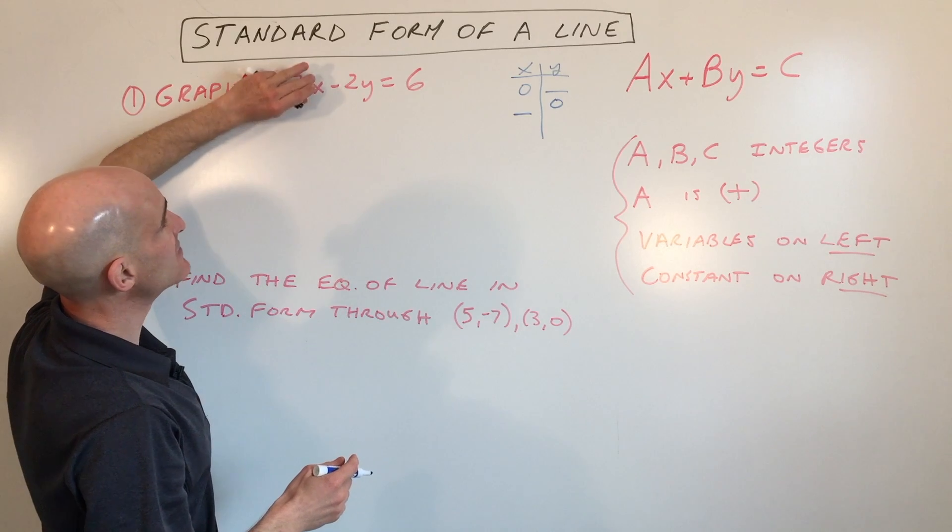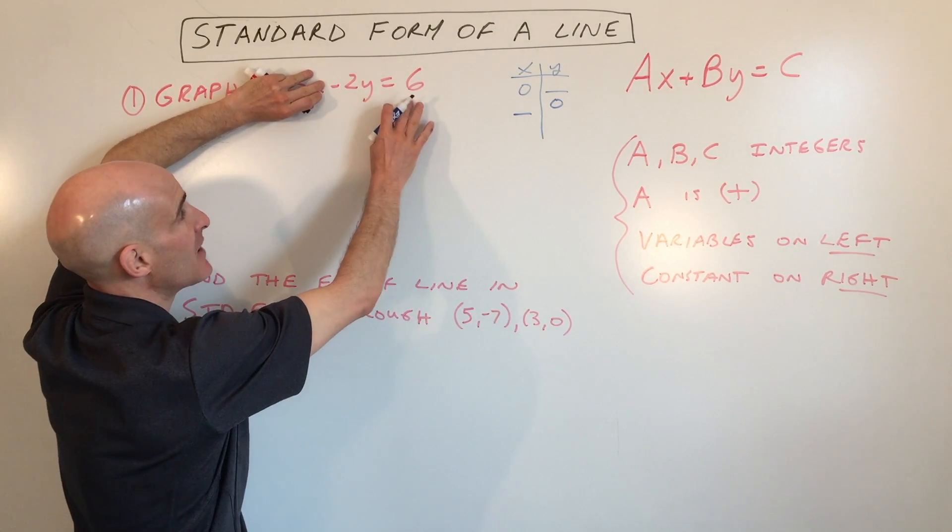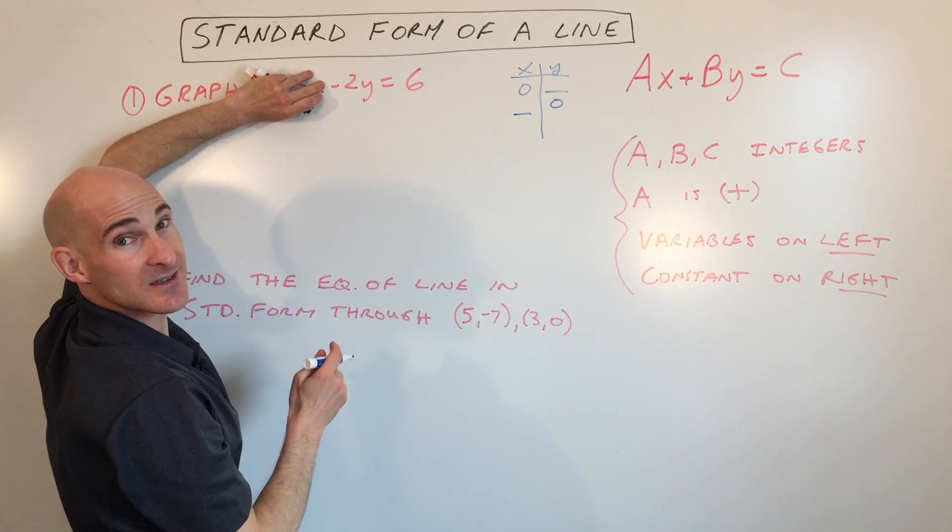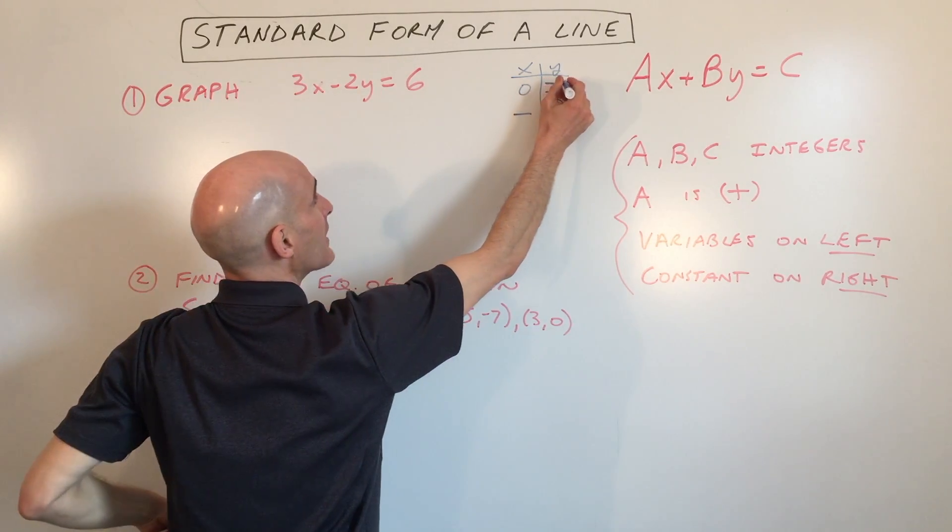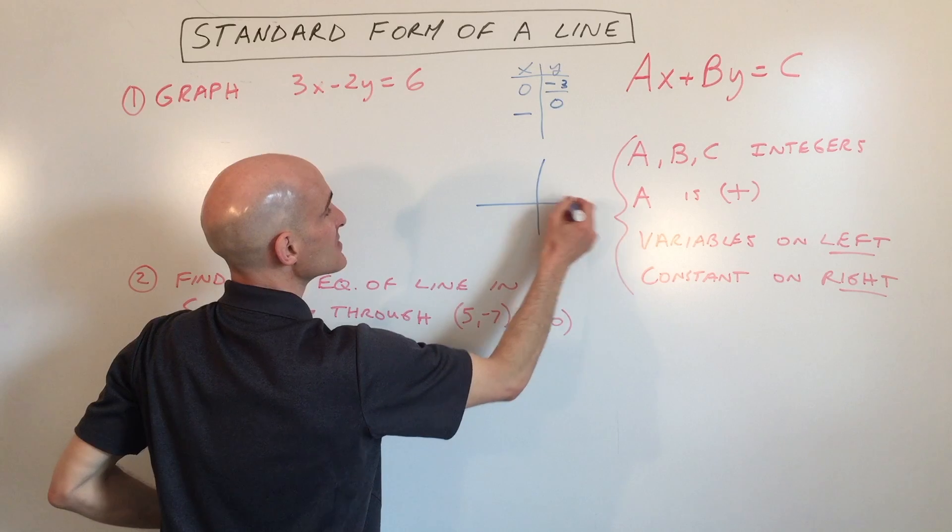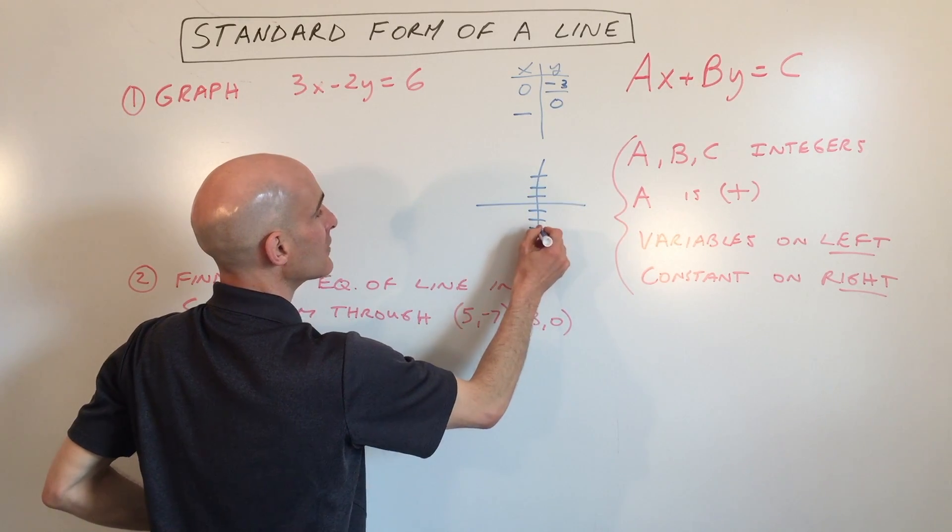If x is 0, 3 times 0 is going to be nothing, so I'm covering that up. If I divide by negative 2, I can see that y is negative 3. So that's our y-intercept, meaning it crosses the y-axis at negative 3.